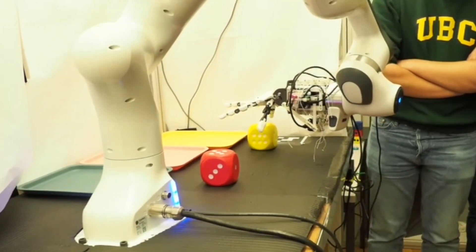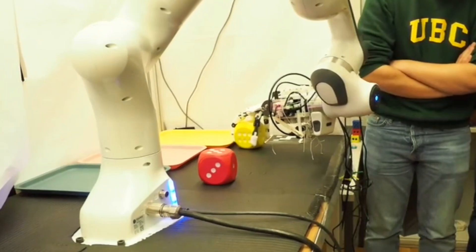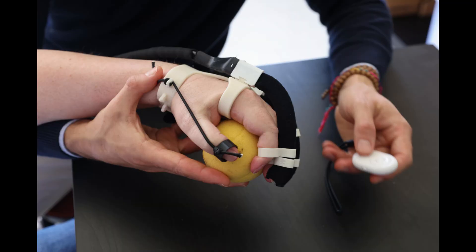Yet, even with such minimal tactile sensing, Orca still achieved stable imitation learning control. Much like how humans, even with impaired sensation, can still grasp reliably using vision and residual touch.